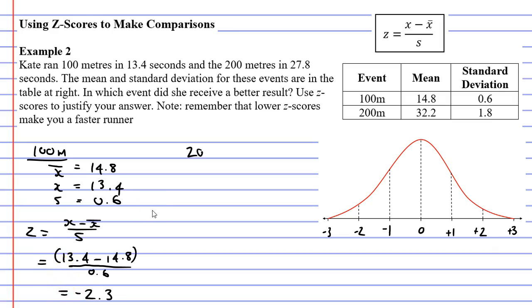Let's now look at the 200 meters. What is the mean, or what is known as x-bar this time? The mean in the 200 meters is 32.2 seconds. Now, Kate ran the 200 meters in 27.8 seconds. That's her score, or x, is 27.8. And the standard deviation, we can see, is 1.8. So s, our standard deviation, equals 1.8.